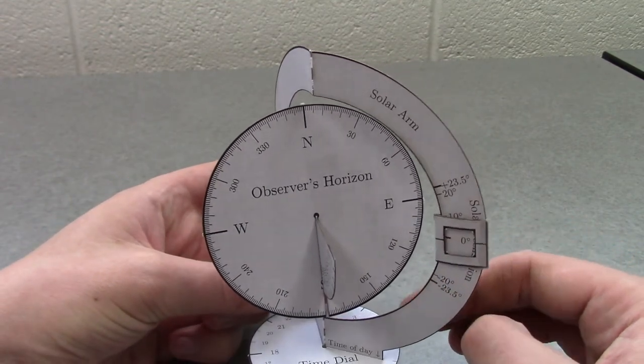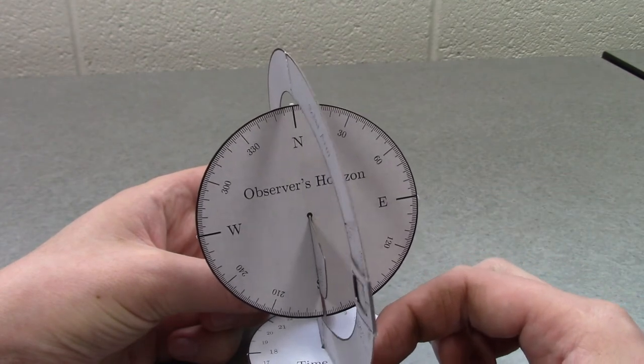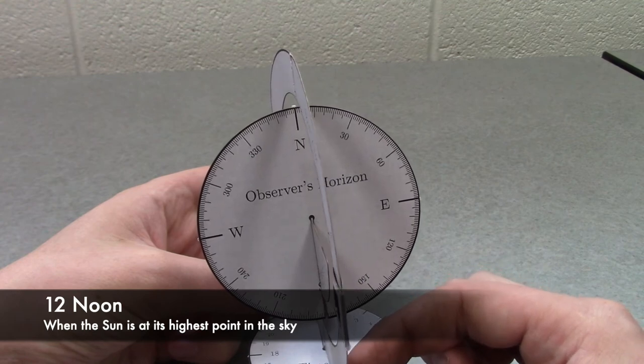Then if I fast forward the time of day, the sun is going to be moving up to the horizon, and it's going to be at its highest altitude, the highest angle in the sky at noon.